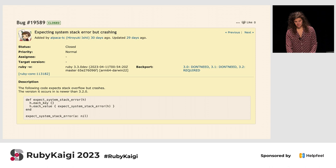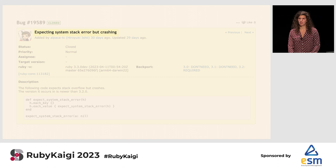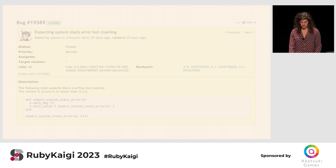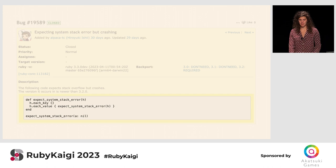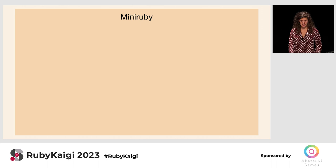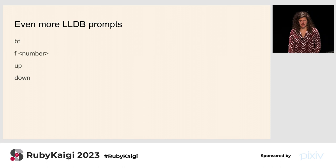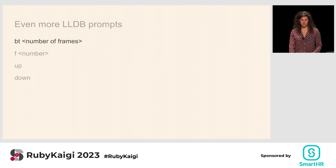Now for the second bug: "Expecting SystemStackError but crashing." This was actually a bug in some code I wrote about object shapes. The part I wanted to call out was the crashing — what does this mean and how does it look different under LLDB? This bug report similarly had a minimal reproduction example we could put into test.rb. If we run `make lldb` and call `r`, it takes us directly to the crash — the process stops there. To handle this, we'll want a few more LLDB commands.